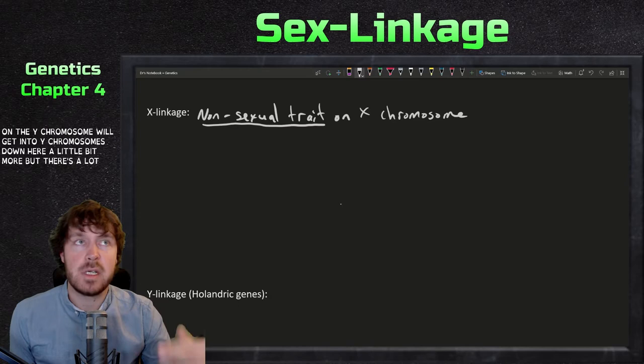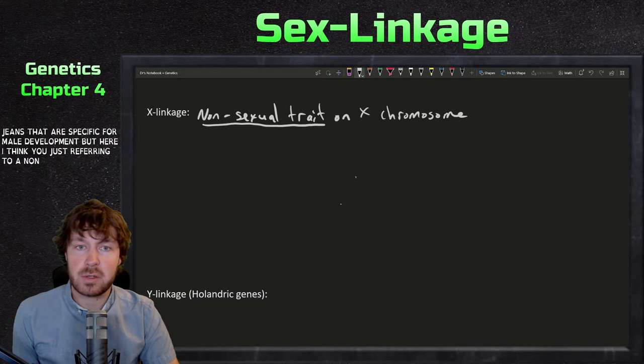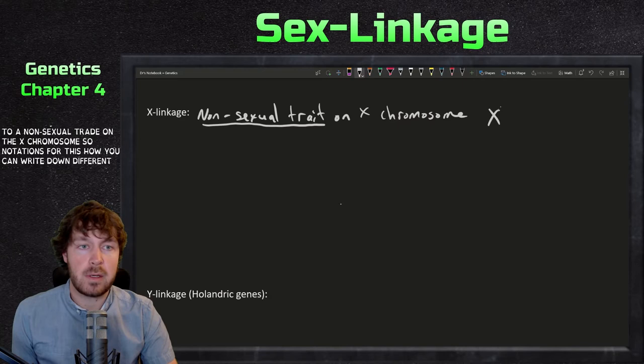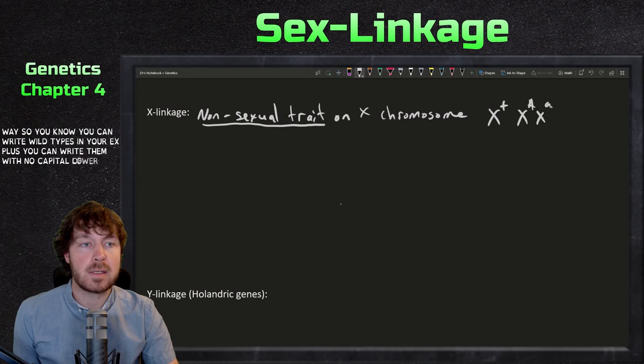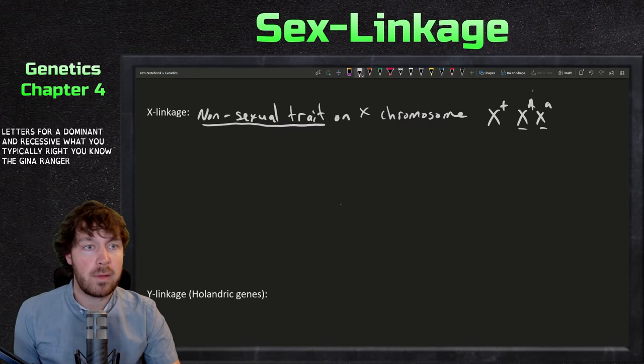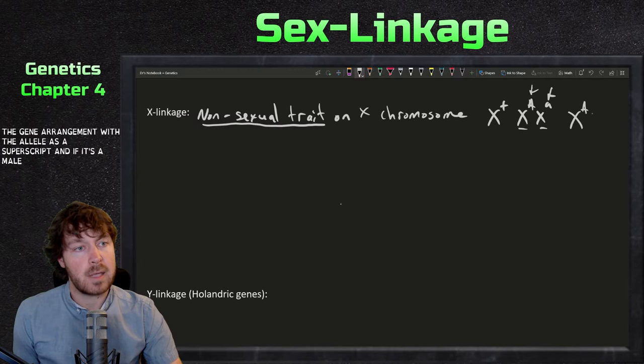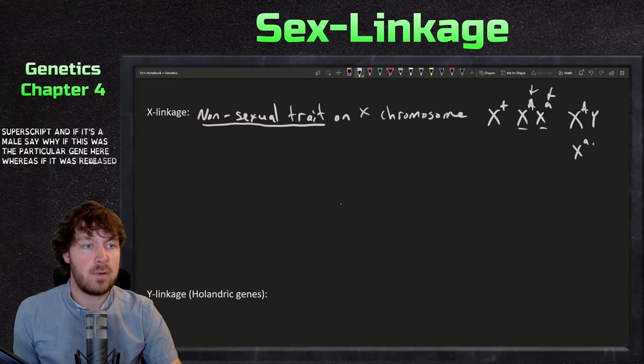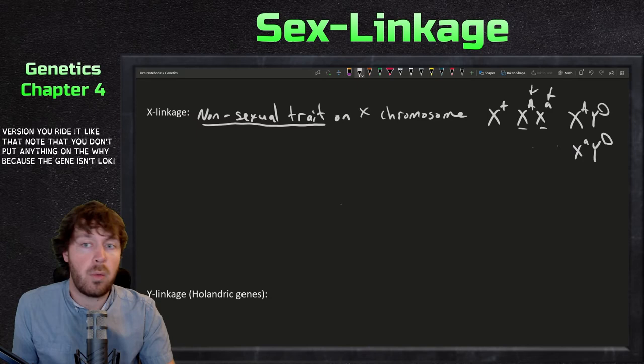Notations can be written different ways: you can write wild type as X-plus, or use capital and lowercase letters for dominant and recessive, but you typically write the gene allele as a superscript. For a male it would be written X^A Y, and if it's a recessive version you write it accordingly. Note that you don't put anything on the Y because the gene isn't located on the Y. Males are hemizygous, meaning they only have one of those chromosomes.